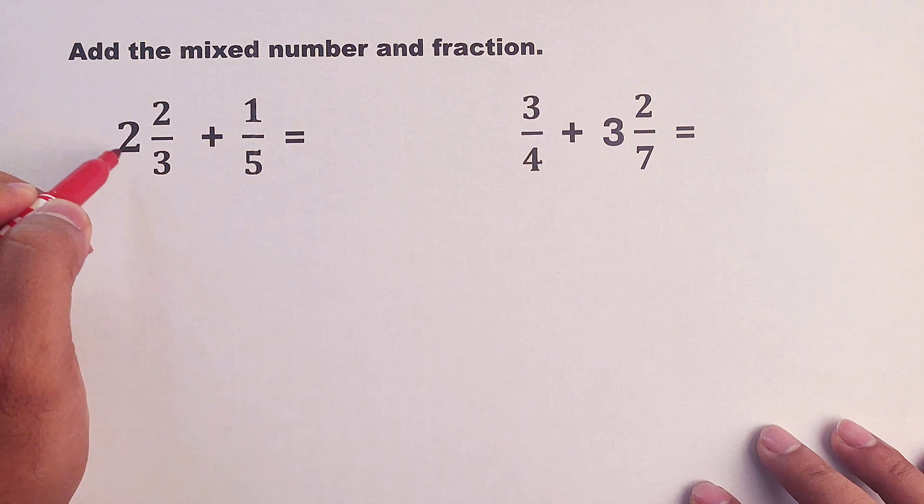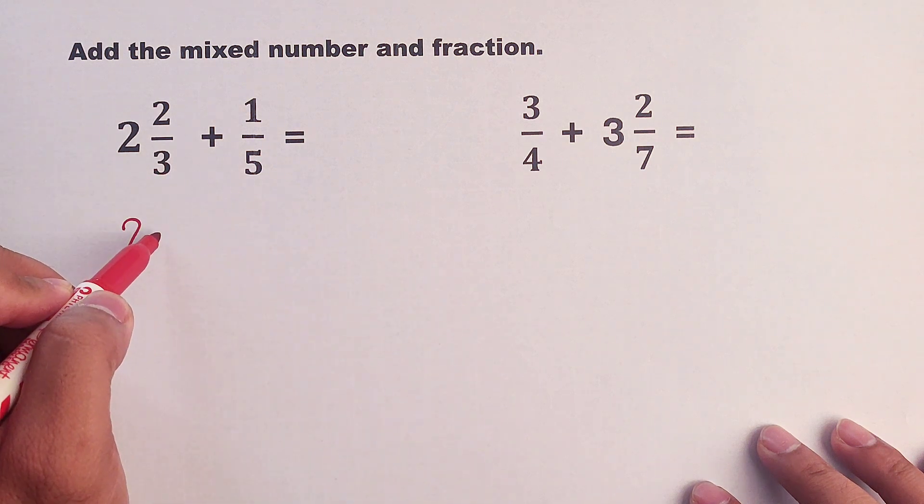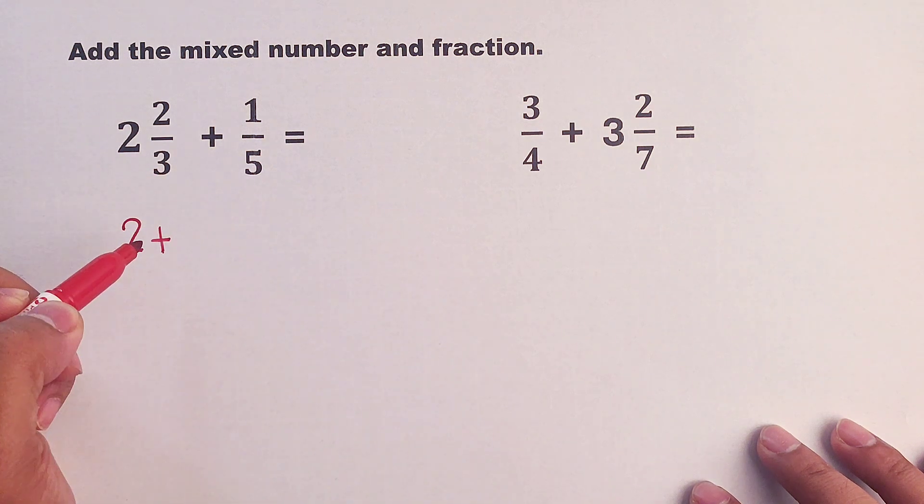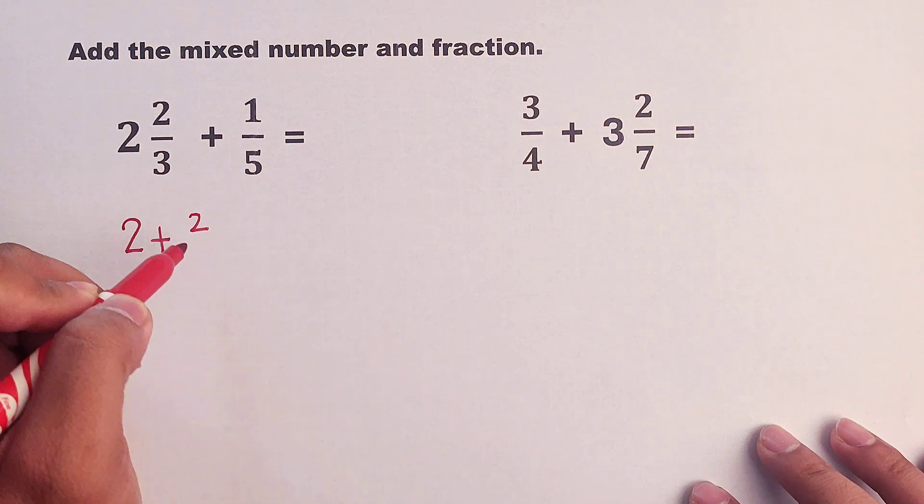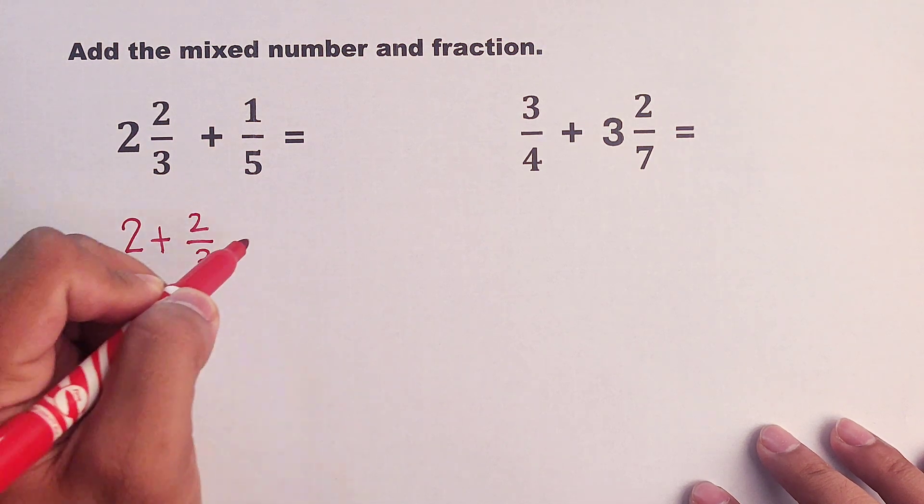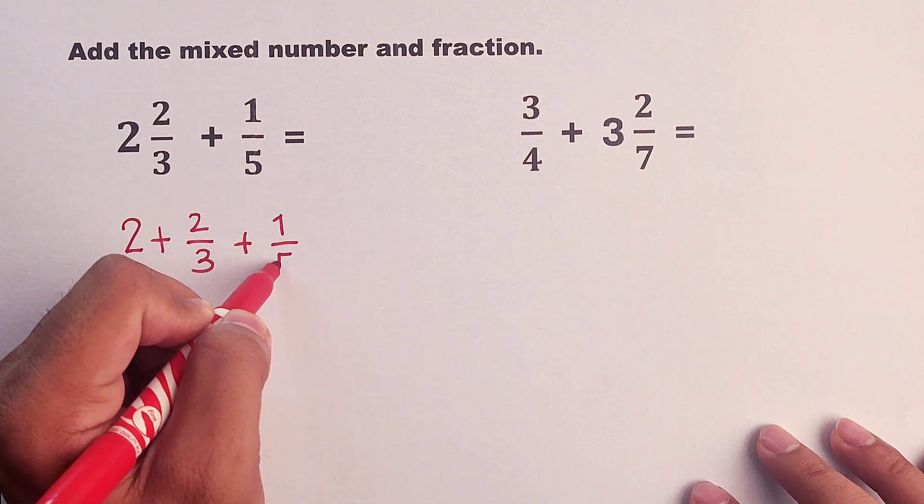First, we will copy the whole number. Then I will add separately the fractions. So we will put here plus first and I will add the fractions 2 over 3 plus 1 over 5.